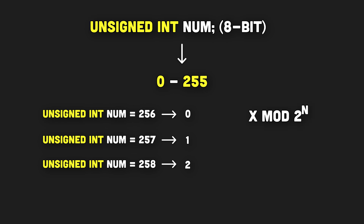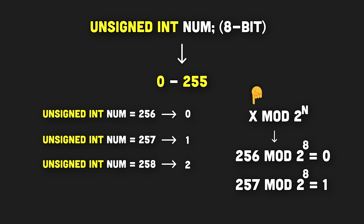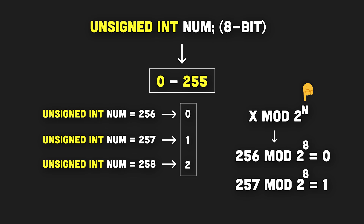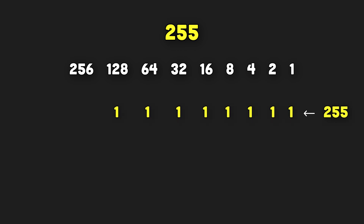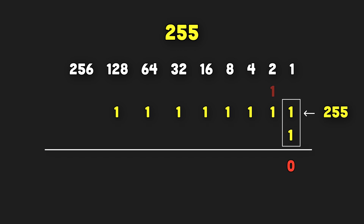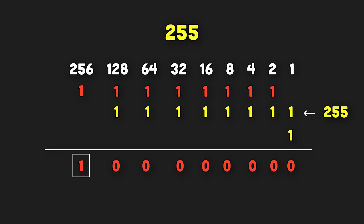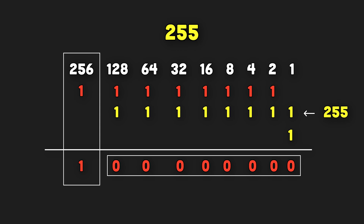This behavior can be represented with modulus arithmetic, where X represents the number to be assigned or the overflow, and N represents the number of bits. But why does any number greater than the maximum overflow or wrap around? Let's take 255, the maximum for an 8-bit unsigned integer. In binary, it looks like 8 bits all set to 1. When we add 1 to this binary number, 1 plus 1 equals 0 with a carry of 1, cascading through all bits, resulting in an overflow set in the 9th bit, which is outside our 8-bit range. Since all of the first 8 bits are set to 0, the decimal representation is also 0. That's what happens behind the scenes when a number overflows to 0.